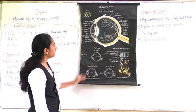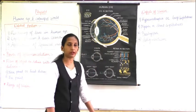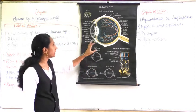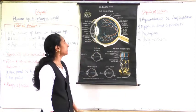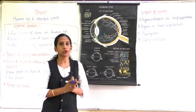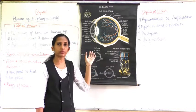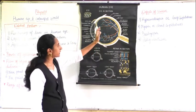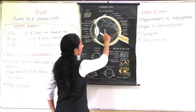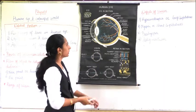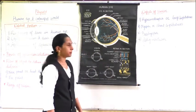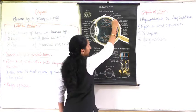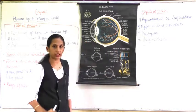Behind the pupil, a lens is present. This lens is held and supported by the ciliary muscles. The ciliary muscles help to increase or decrease the focal length of the eye. Behind all this, the inside part contains a fluid-like substance; it is called the vitreous chamber. Inside this chamber you can see blood vessels.